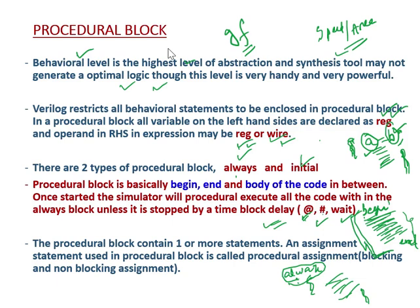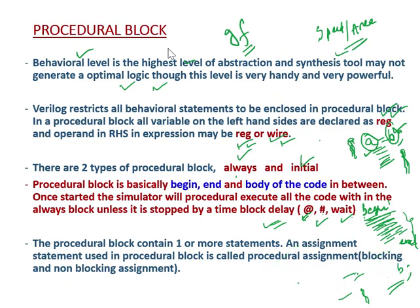The procedural block can contain one or more statements. For example, if I write A equal to B, that is a procedural assignment. Whatever assignments we do inside the procedural block are called procedural assignments. There are two types of procedural assignment: one is blocking assignment and another is non-blocking assignment, which we will learn later.